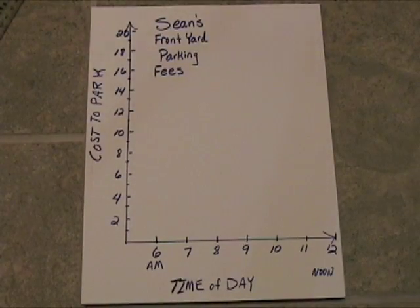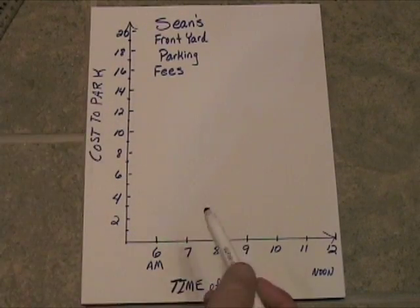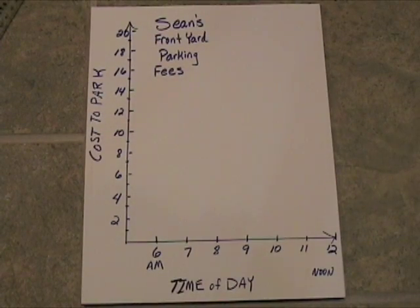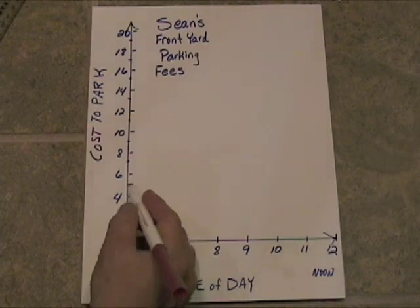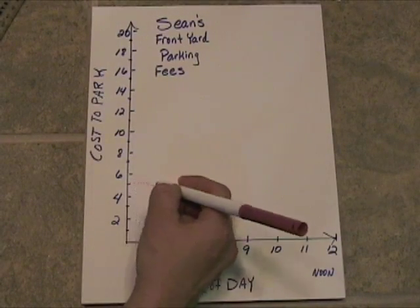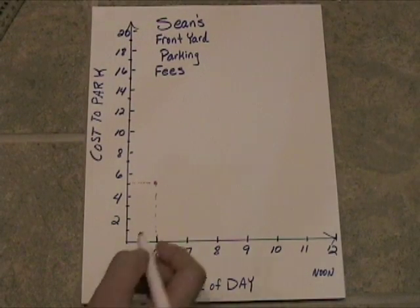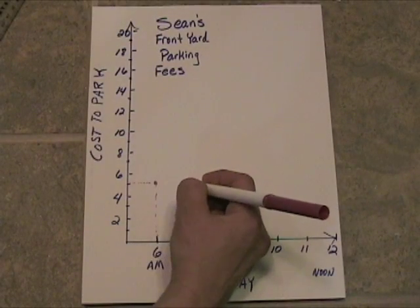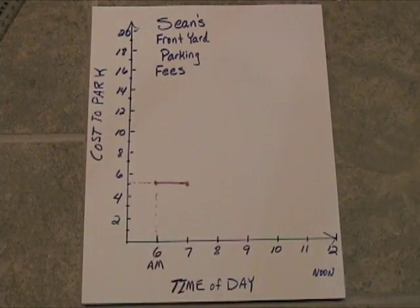This is Sean's front yard parking fees. The x-axis is time of day — we're going to look at these fees from 6 to noon — and along the y-axis we have the cost to park. Let's say you pull in your vehicle at 6 o'clock, even for just a second — it's going to cost you $5. So we go up to $5, across from $5 and up from the 6, and we place a solid dot right there. The whole way to 7, it stays at $5. So there's the first step.